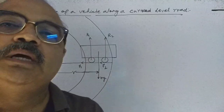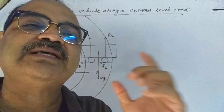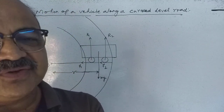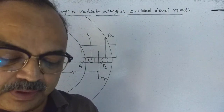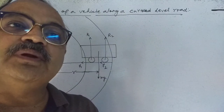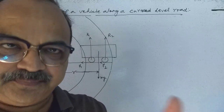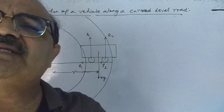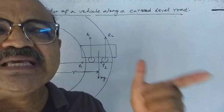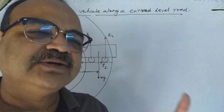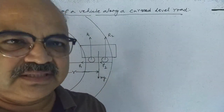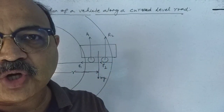Good morning students. In our last class we were talking about the dynamics of uniform circular motion. I briefed that if a body is moving along a circular path, especially a uniform circular path, then only the centripetal force will be acting, always towards the center. We also talked about the pseudo force — the centrifugal force — which is equal and opposite to the centripetal force.